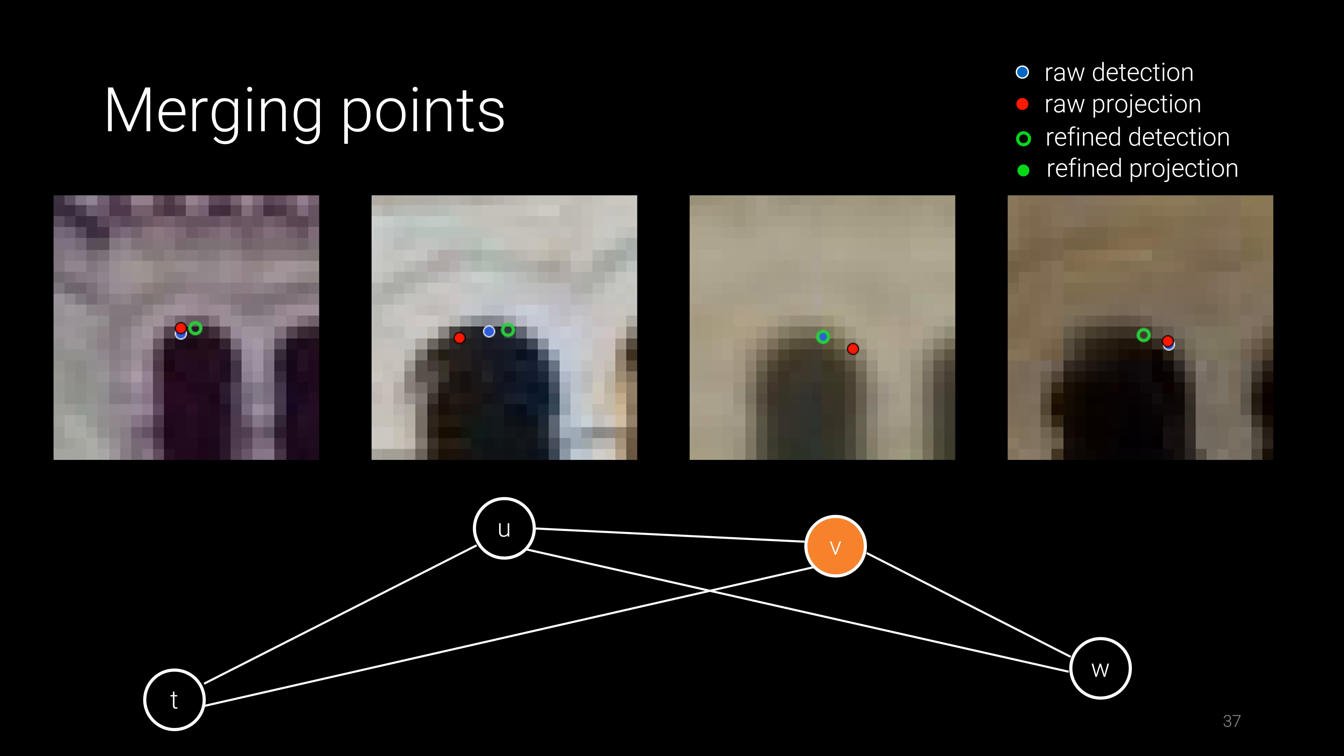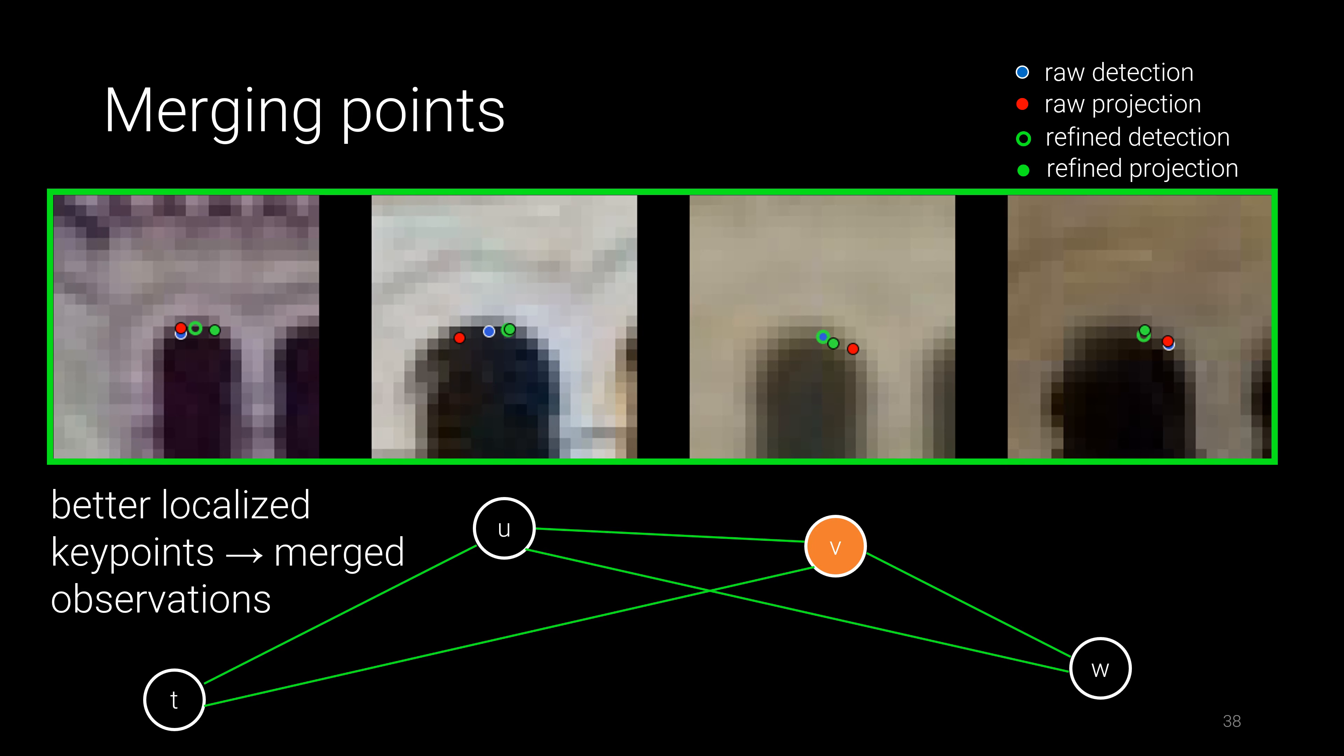Featuremetric keypoint adjustment reduces this detection noise by optimizing the graph jointly, and COLMAP is then able to correctly triangulate the matches to a single, more robust 3D point with larger track length and smaller reprojection error.